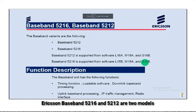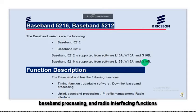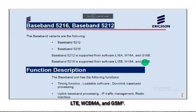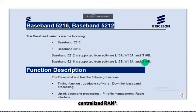Ericsson Baseband 5216 and 5212 are two models of baseband units that are part of the Ericsson radio system. They provide switching, traffic management, timing, baseband processing, and radio interfacing functions for radio access technologies such as LTE, WCDMA, and GSM. They also support 5G NR and can be used in different network configurations, such as main remote, baseband HODLing, and centralized RAN.